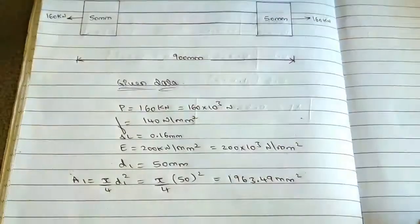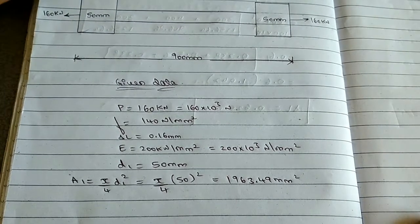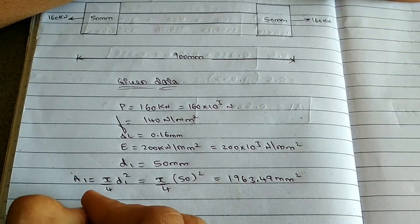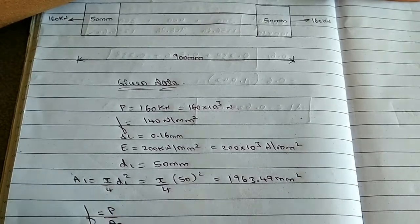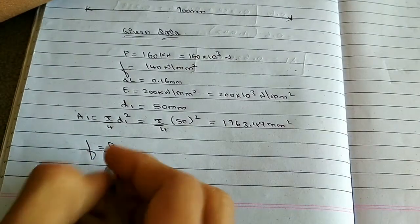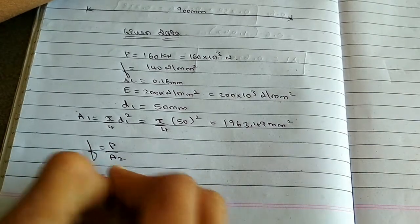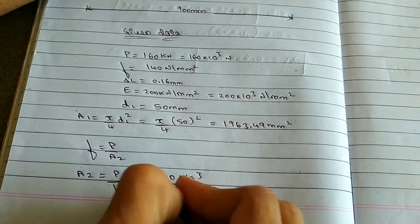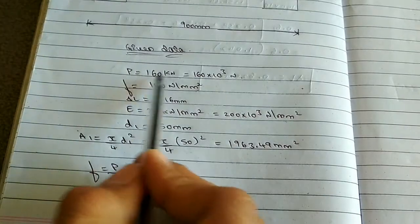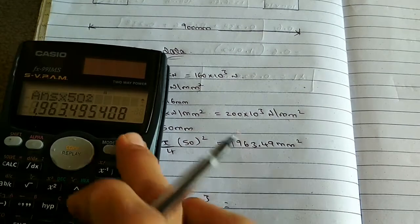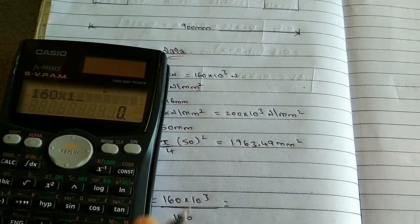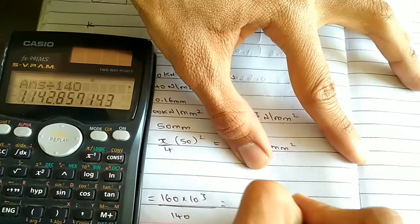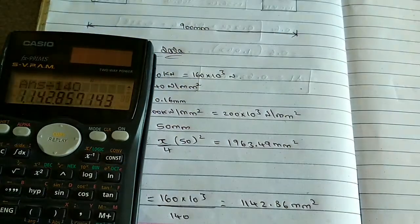Now let us find A2. Using the stress formula: F = P / A2, so A2 = P / F = (160 × 10³) / 140 = 1142.86 mm².